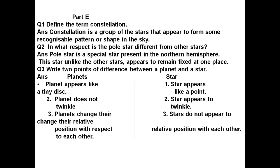Question number 3: Write two points of difference between a planet and a star. Planets appear like a tiny disk. Planets do not twinkle. And planets change their relative position with respect to each other.